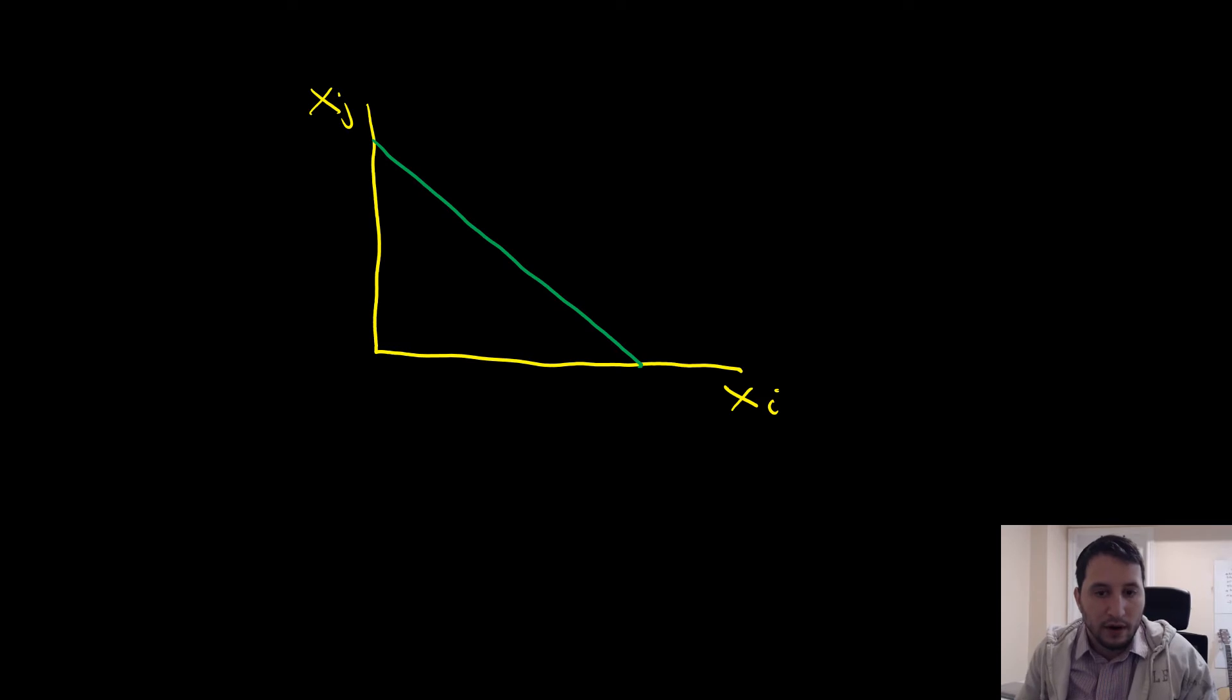Now remember, u bar in this context is going to be alpha i xi plus alpha j xj, and that's what is going to be here. So I should probably just redraw over it in red so we don't get confused.